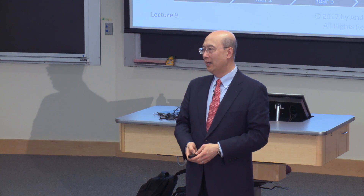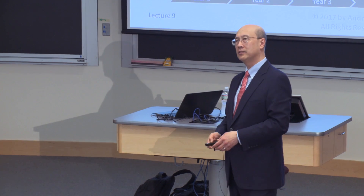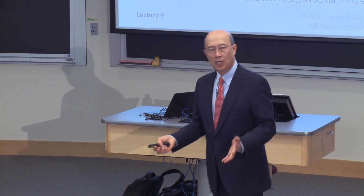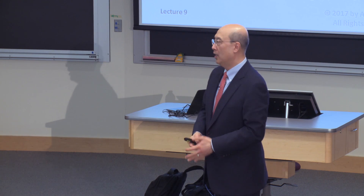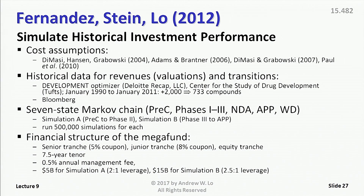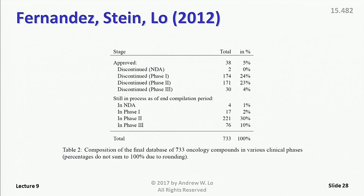That's the simulation of a megafund. It seems simple enough, except that you need to specify various different parameters. In our original paper, we got parameters from the industry — we knew nothing about the underlying mechanisms of drug discovery and development. We looked at publications on what it cost to develop a drug and the historical data for revenues. We simulated a seven-state Markov chain to simulate going from phase one to phase two, phase two to phase three, and so forth, and then structured a megafund to try to capture these kinds of dynamics.